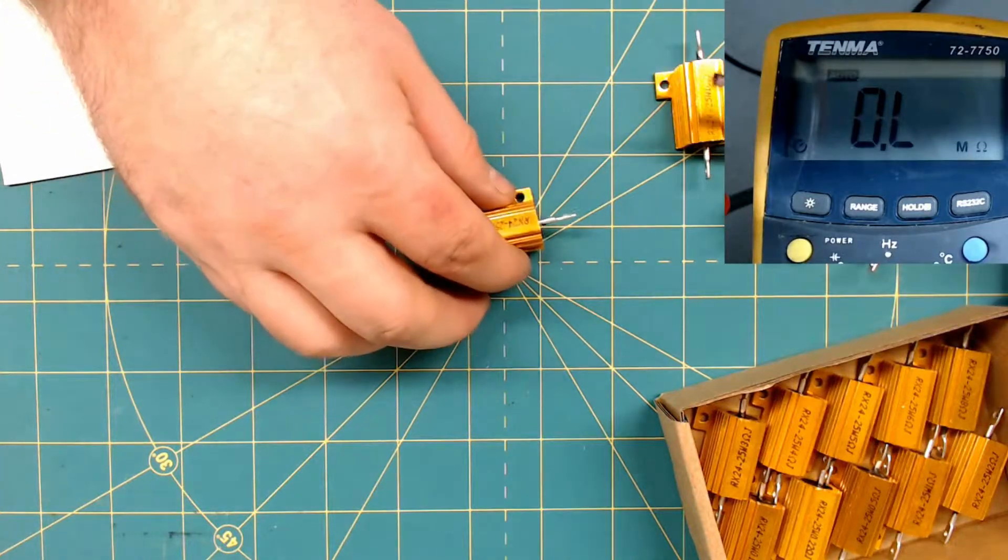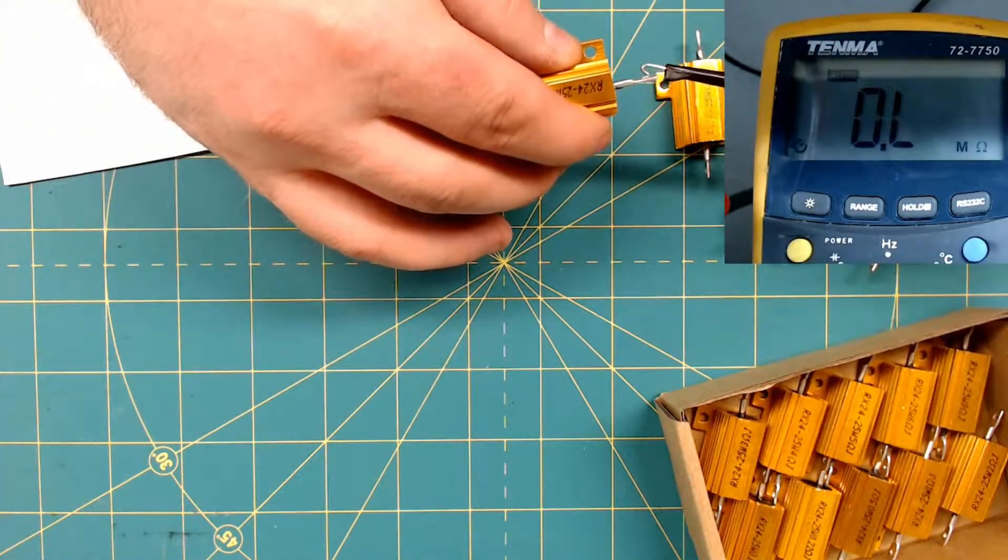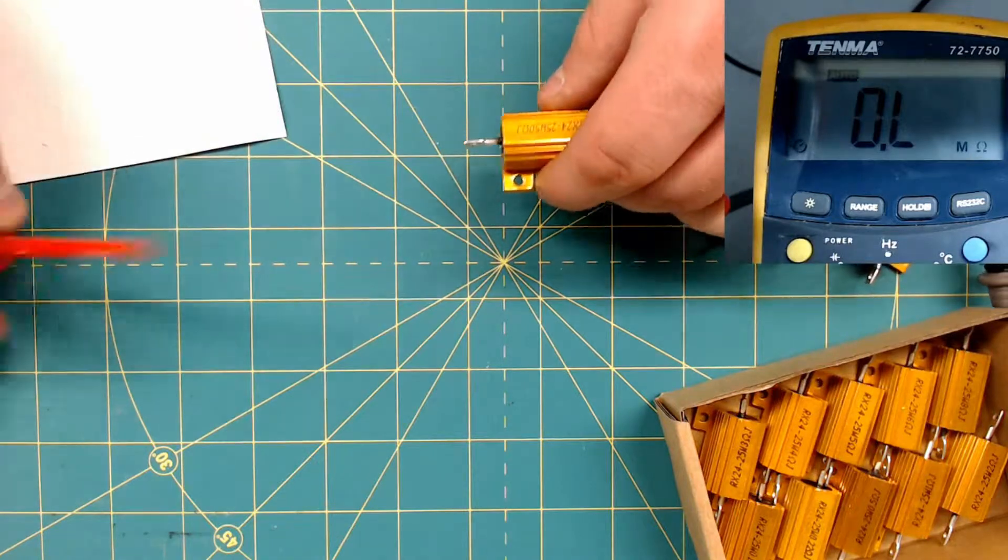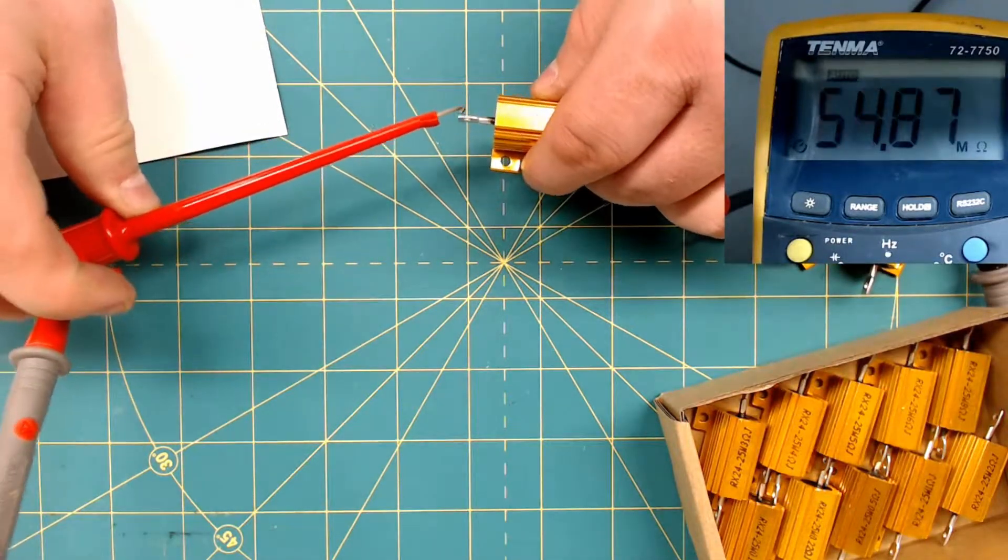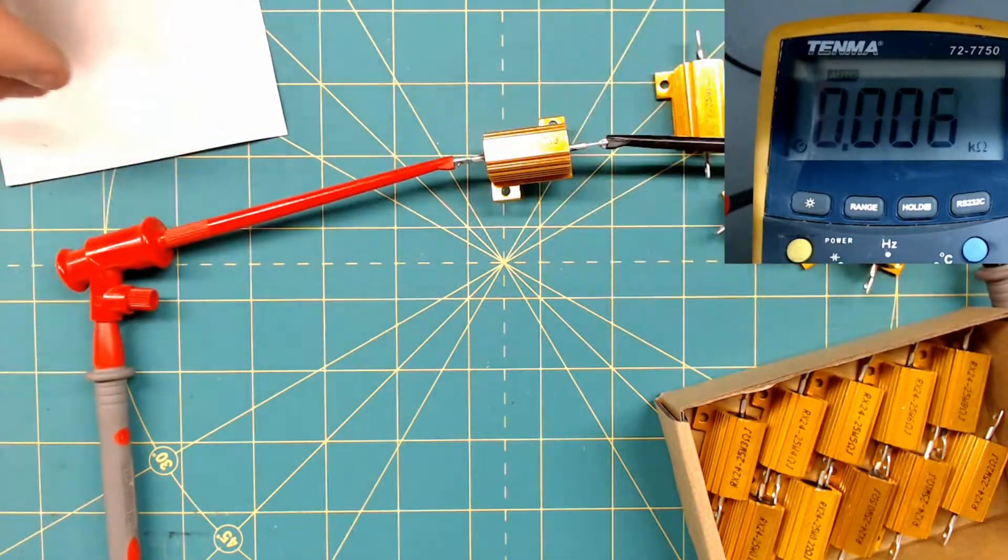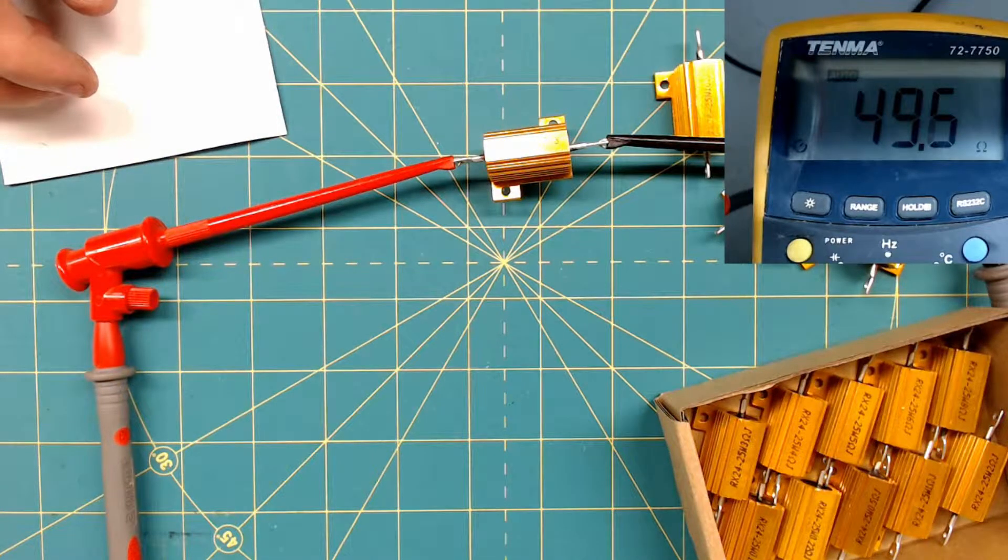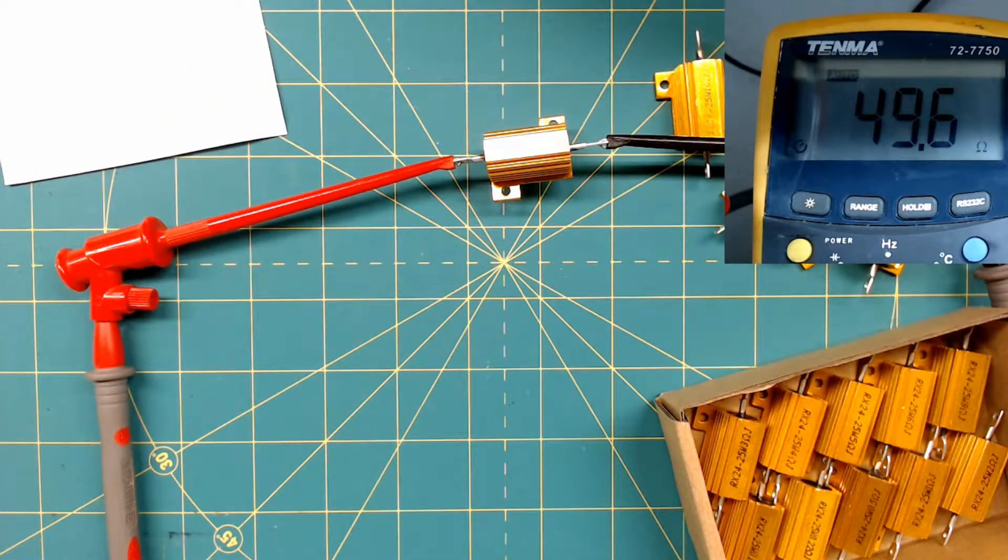Okay, so let me hook this 50 ohm on. And there we go. There we go, 49.6. I can't actually remember what the tolerance was on these things.